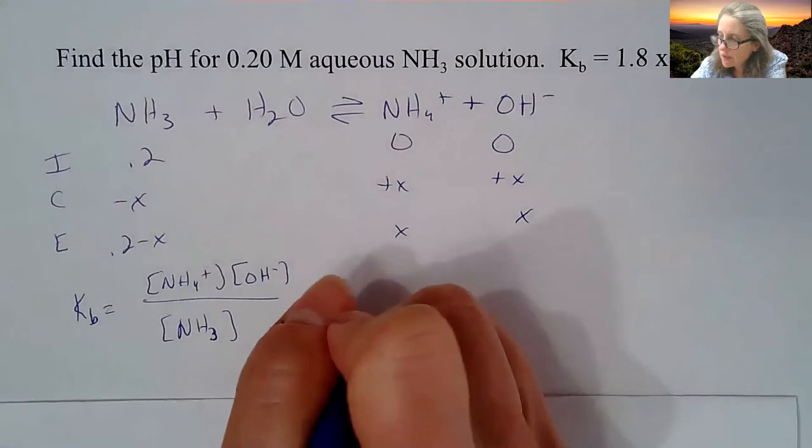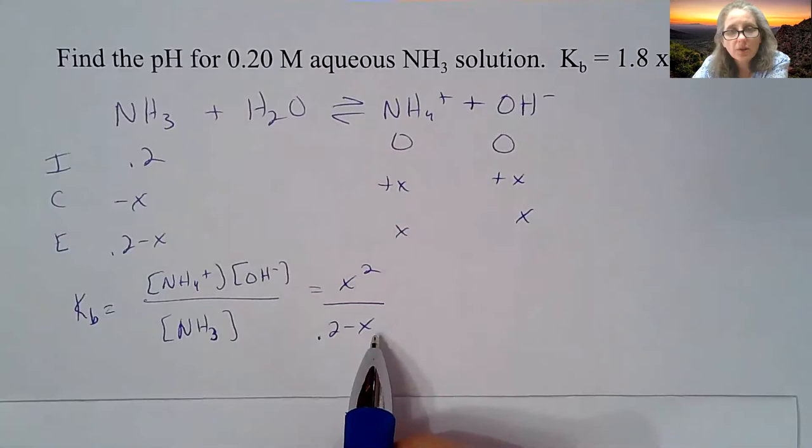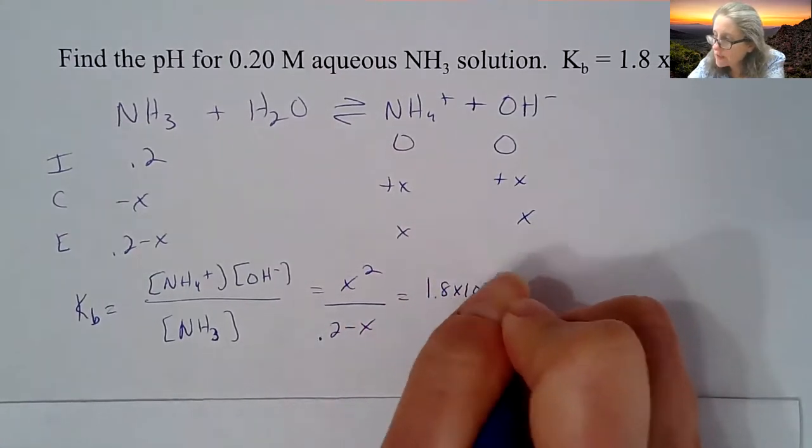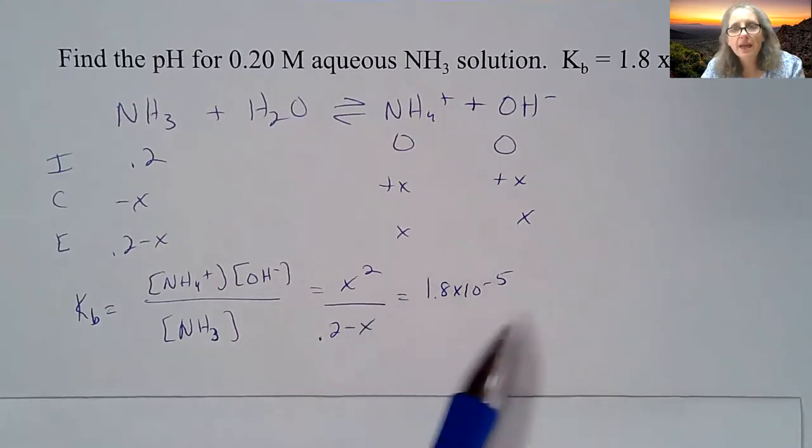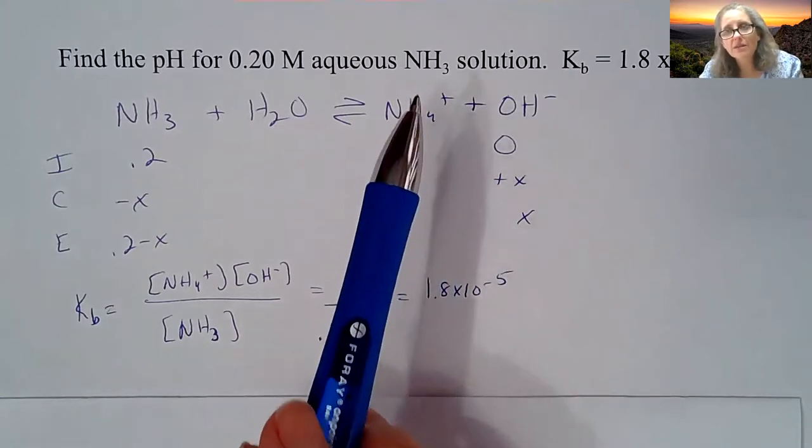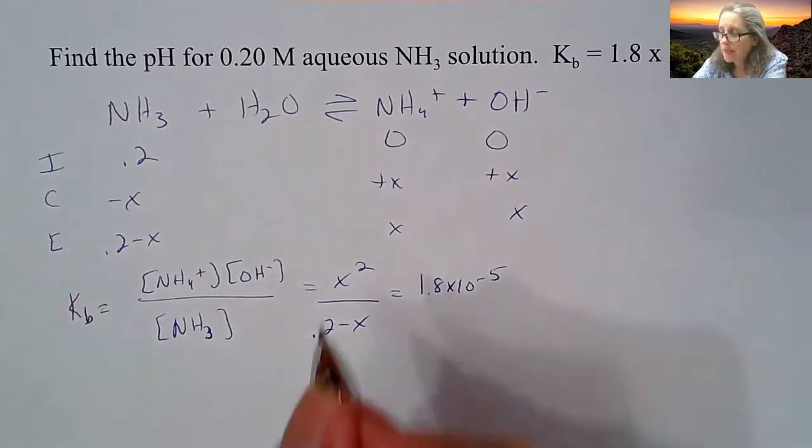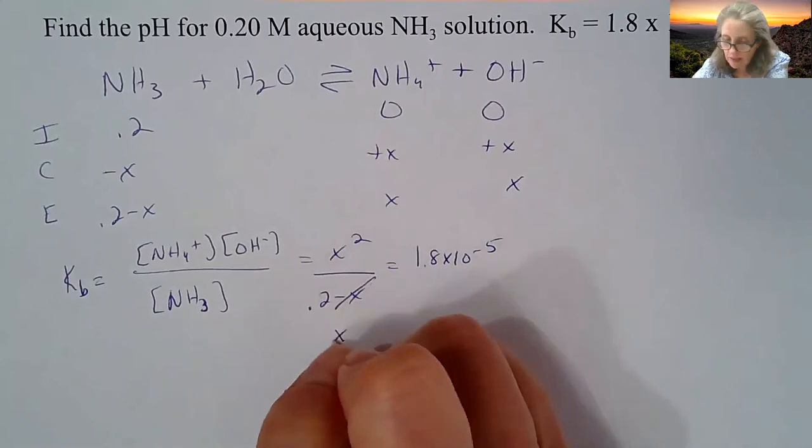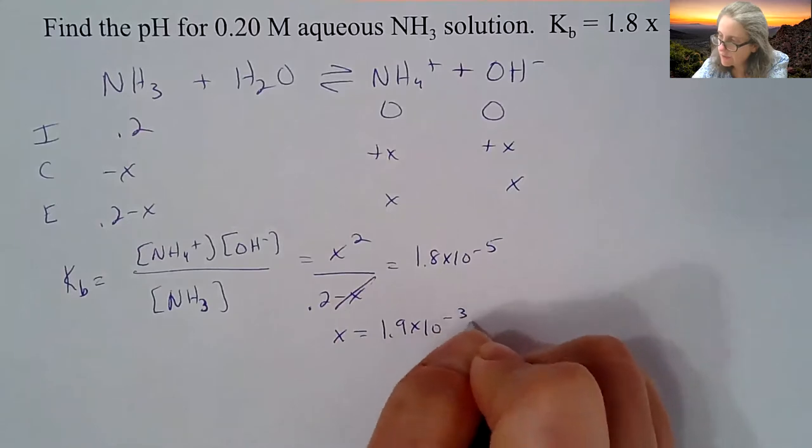So the top is always going to be X squared and the bottom is always going to be the initial concentration minus X, and this is going to equal your Kb value. This Kb value, whatever the base is going to be, is always going to be given to you. Like the weak acids, we're going to cross out that X and we're going to confirm this with a percent ionization. So X comes out to be 1.9 times 10 to the negative third.